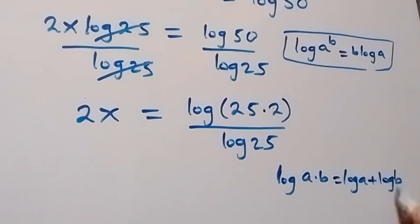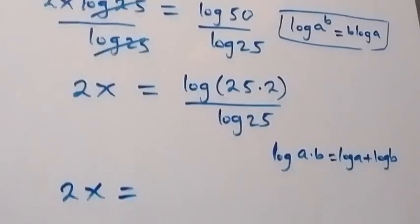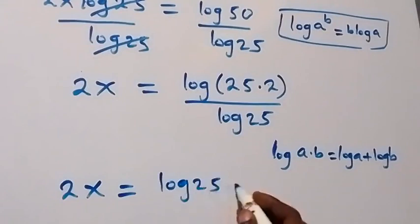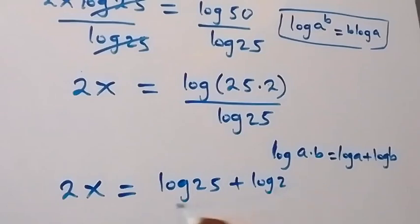So when we write this 25 times 2 in that format, this becomes 2x equals log 25 plus log 2, divided by log 25.